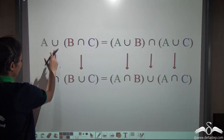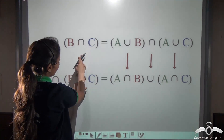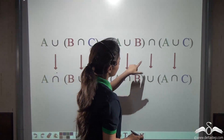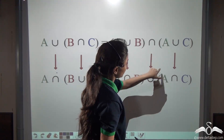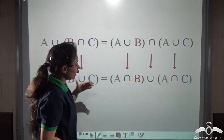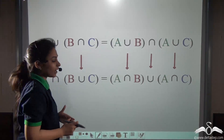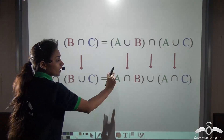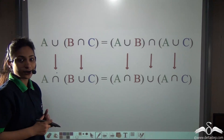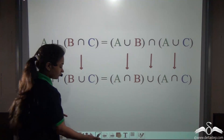Union becomes intersection, intersection becomes union, again union becomes intersection, intersection becomes union, and union becomes intersection. Even after reversing all these signs, we get a new relationship which again holds true. That I will show you with the Venn diagram.